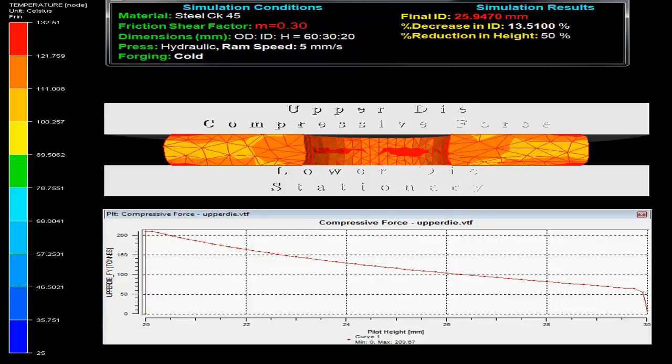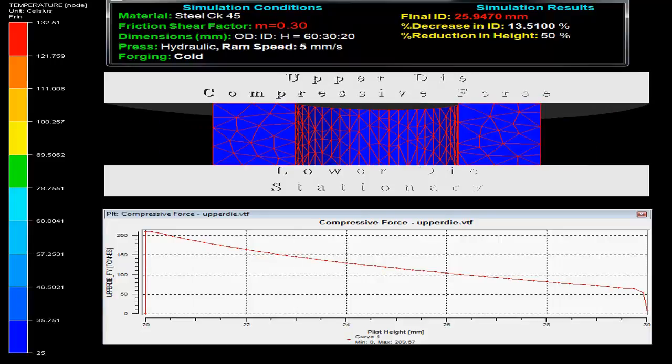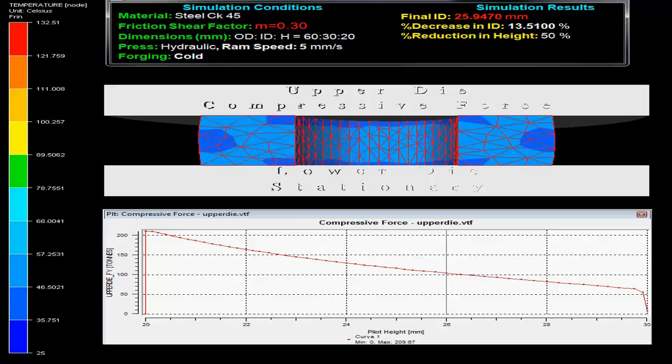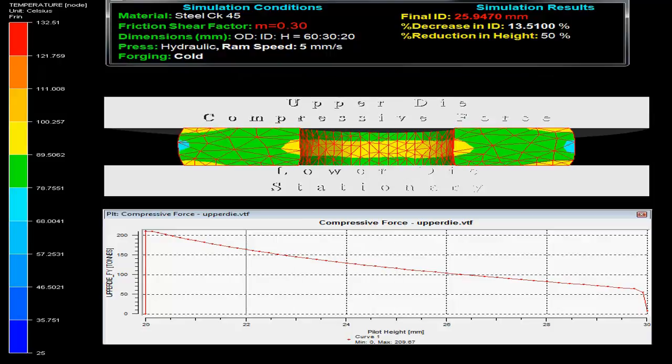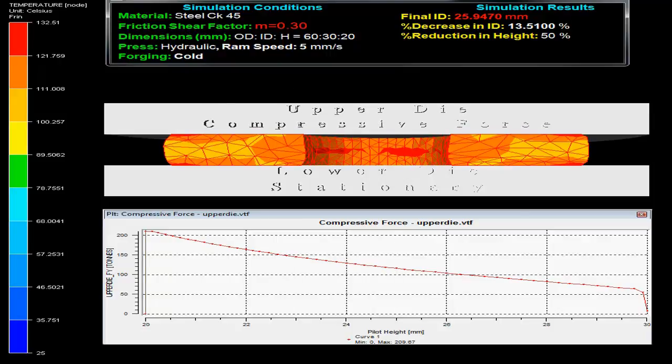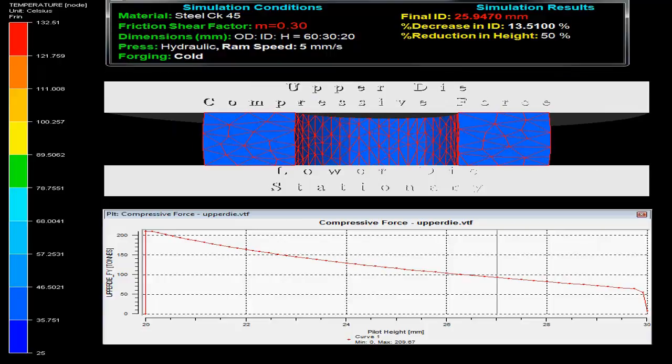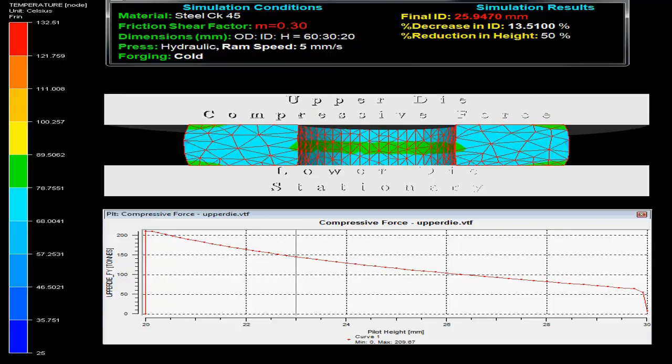Ring compression test has widely been used as a test to evaluate the friction condition in metal forming process. The video shows that a short ring specimen is plastically compressed between two flat dies with lower die stationary and upper die movable.